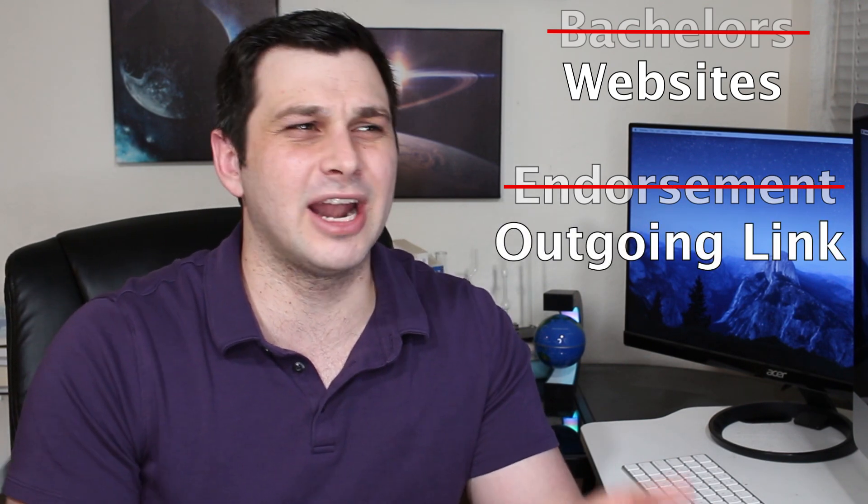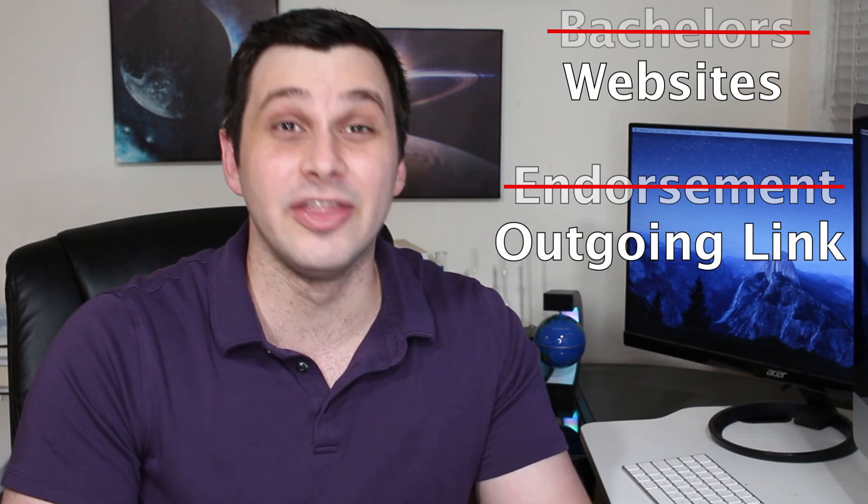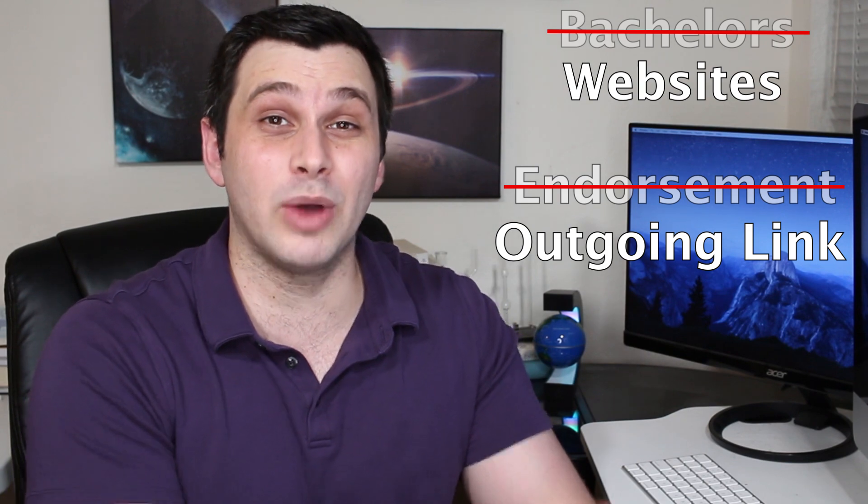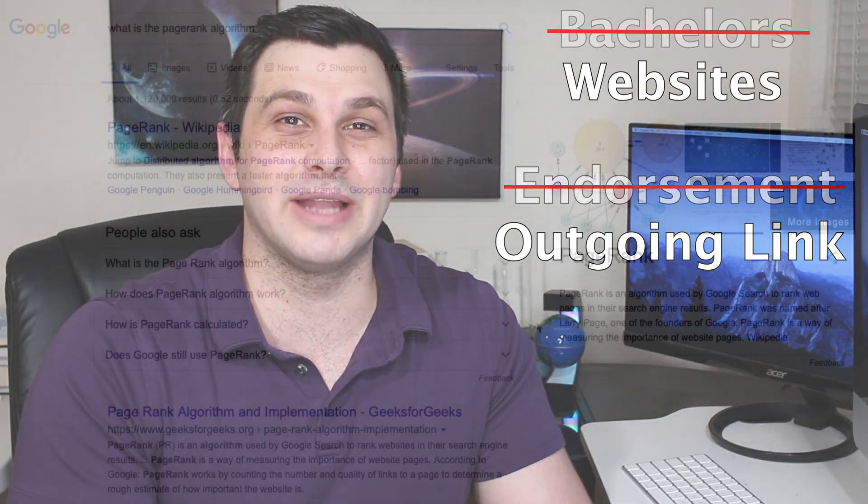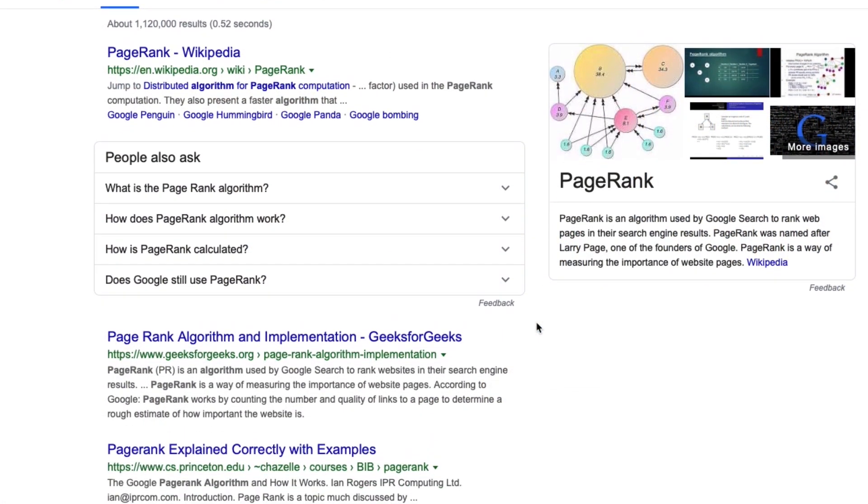If we just consider the bachelors from before as websites and an endorsement as a link from one site to another, which can kind of be thought of as an endorsement, then we have the basics of how Google ranks webpages. The ranks would just be like which sites show up first based on what you put into Google.